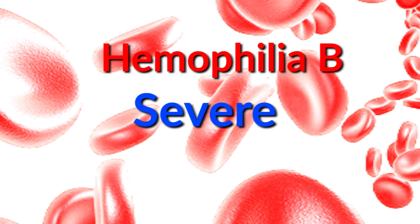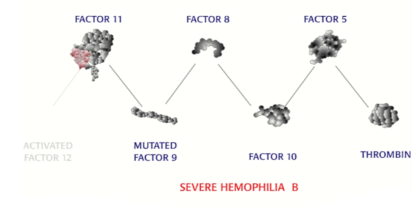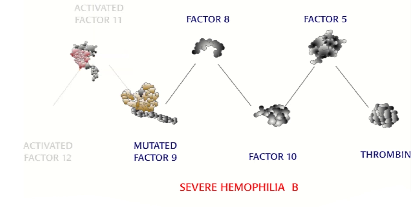When hemophilia B is severe, a more critical mutation in the gene completely misshapes the factor 9 protein. The protein either cannot be activated or cannot activate the next molecule in the cascade.